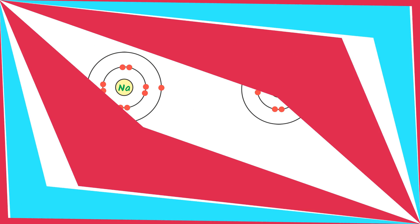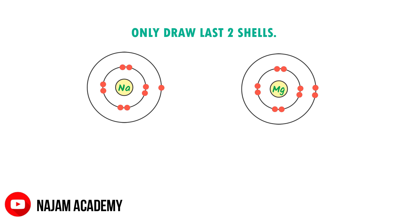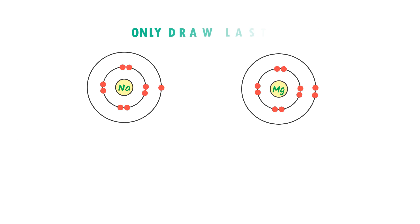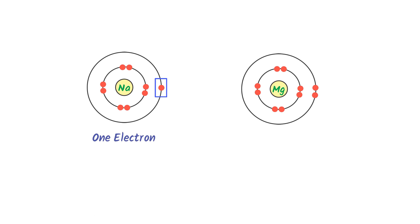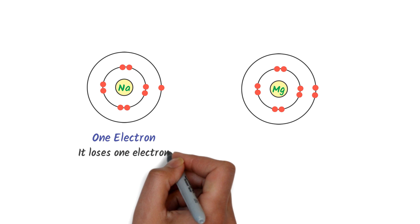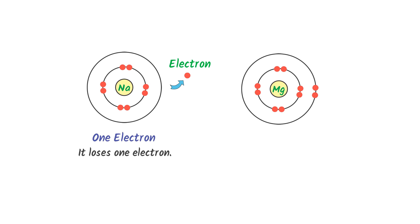Thirdly, consider sodium atom and magnesium atom. Remember that I only draw the last two shells of sodium and magnesium. In case of sodium atom, we can see that there is only one electron present in the outermost shell of sodium atom. Sodium will lose this one electron to gain stability. In the second-last shell of sodium atom, there are eight electrons present, so its octet rule is completed. So we say that the valency of sodium atom is one.